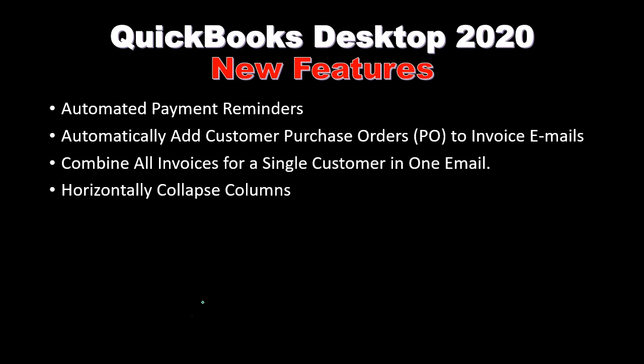QuickBooks has also included horizontally collapsing columns. This will be useful if we have jobs and are running reports that have a lot of columns, given the different jobs or classes included. Before, if we wanted to clean that up, we had to do some customization or export the report to Excel and adjust the columns that way.